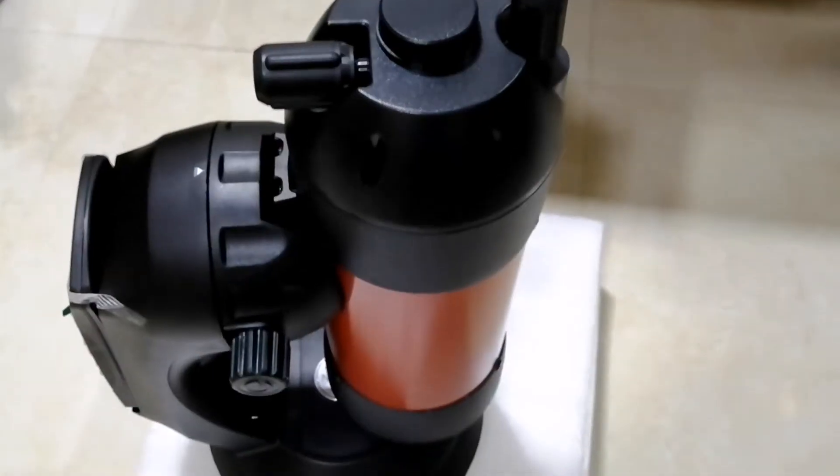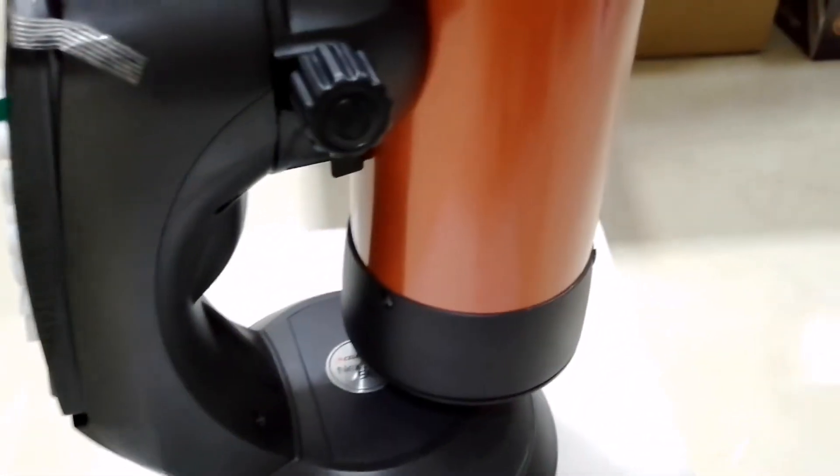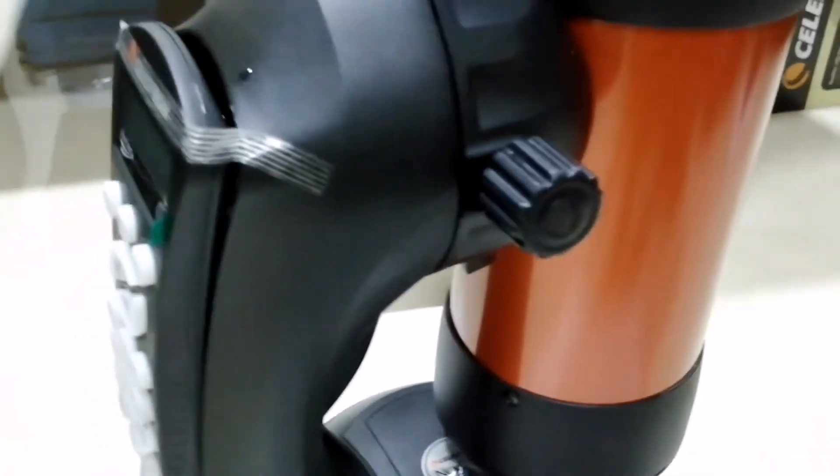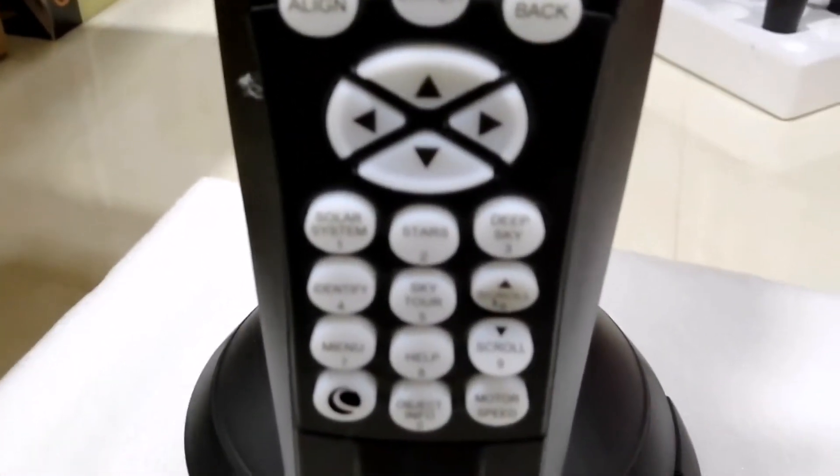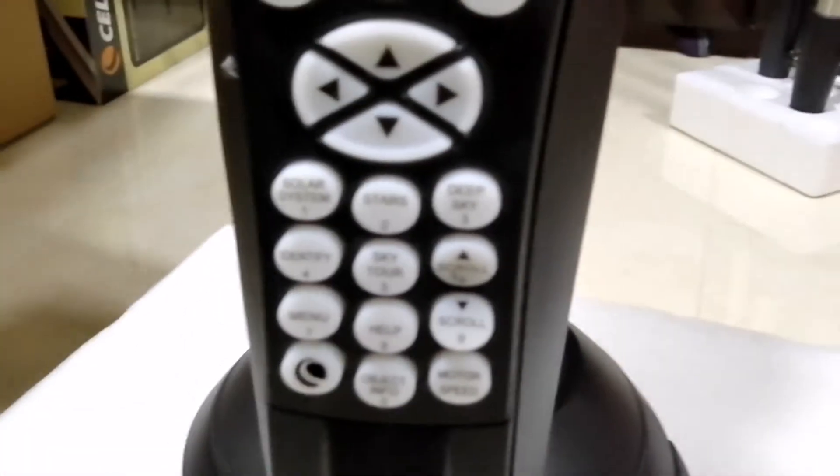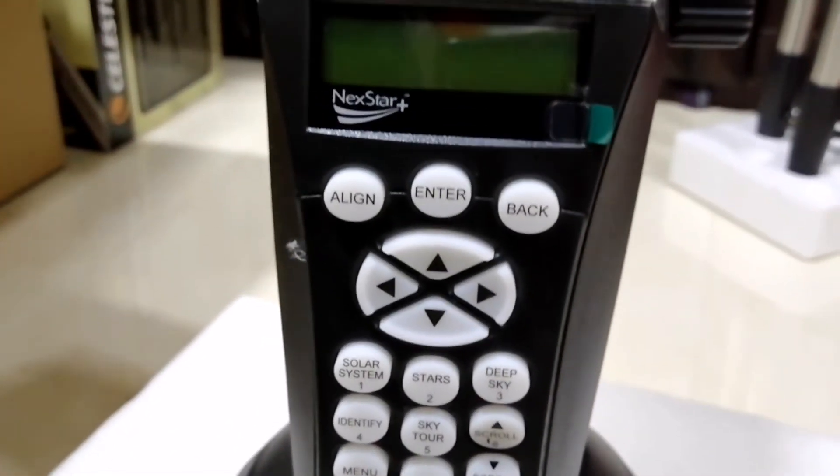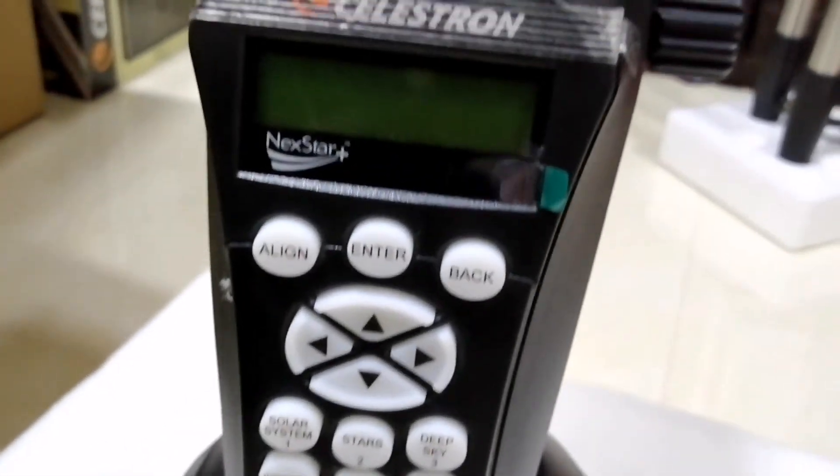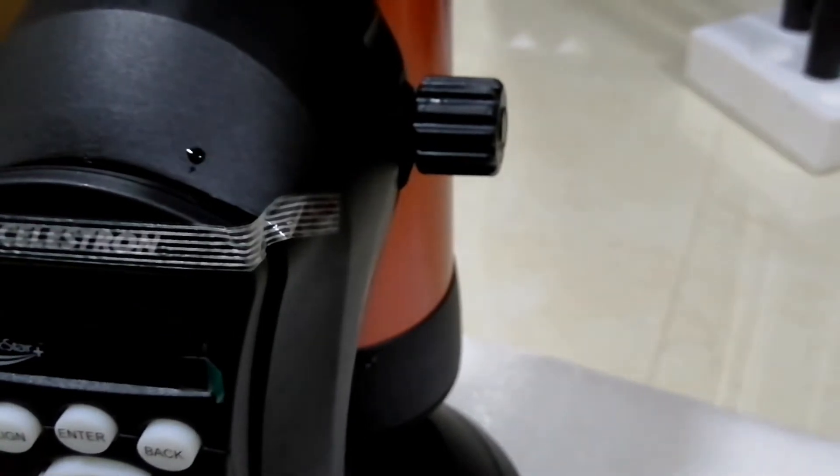Technical specifications. Highest useful magnification: 240x. Limiting stellar magnitude: 12.5. Resolution Rayleigh: 1.36 arcsec. Dawes limit: 1.14 arcsec. Light gathering power: 212x unaided eye. Field of view: 1 degree. Linear field of view at 1000 yards: 52.5 feet.